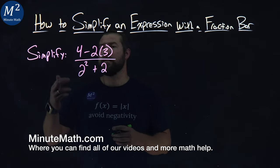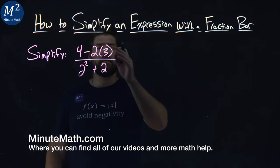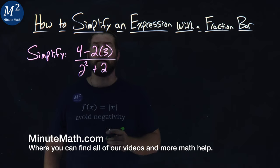We're given this problem right here. Simplify 4 minus 2 times 3 over 2 squared plus 2.